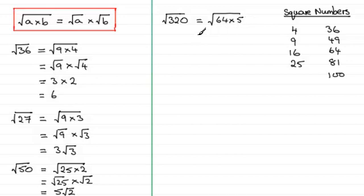But I'll just do this first of all for you. So, it's 64 times 5. And so, this breaks down to the root of 64 multiplied by the root of 5. And the square root of 64 is 8. Root 5 is just left as root 5. So, we just have 8 root 5.